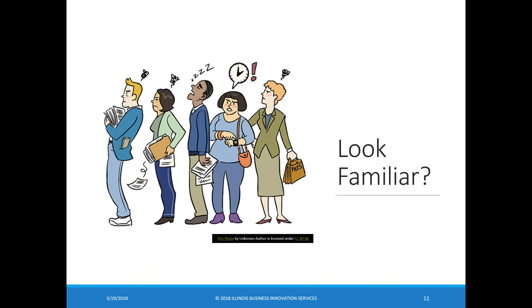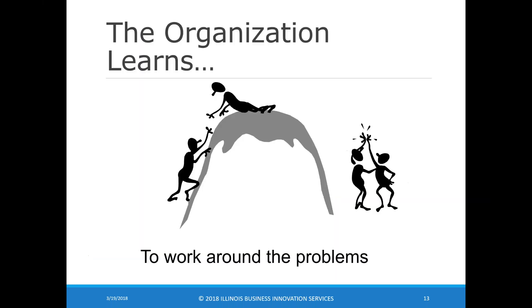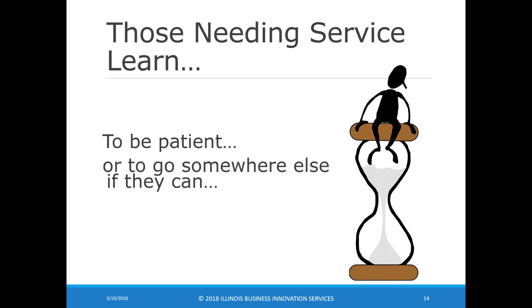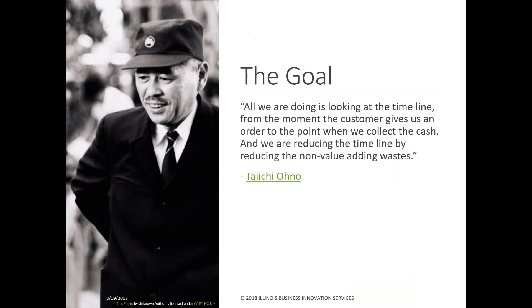We stand in line waiting for things to get done, not sure when it's going to happen, and people get frustrated on both sides. There's the perception that we're sitting around doing nothing, while actually there's all kinds of paperwork and bureaucracy we're trying to deal with. Organizations learn to jump through hoops using a hero mentality to make things happen. The folks who need our services learn to be very patient, or they go elsewhere if they can — and if they can't, they dread the process and those involved.